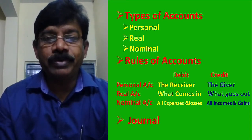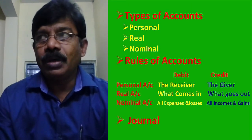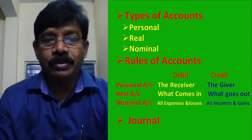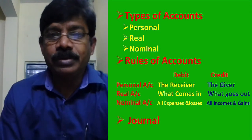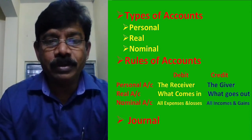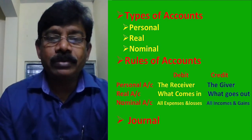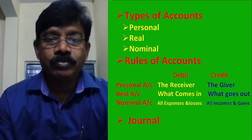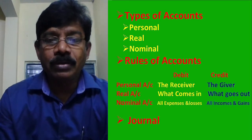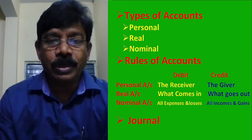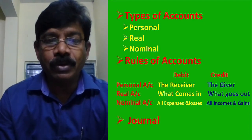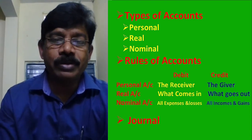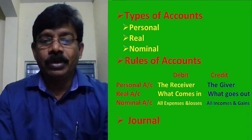Identifying the type of account, applying the rule, and deciding what account to be debited and what account to be credited — that is very important. If you are perfect in stage one, the remaining stages — ledger account and trial balance — will be easy. The basics of accounts are: identification of accounts, knowing the type of accounts, and applying the correct rule to debit or credit the account. This is very, very important.